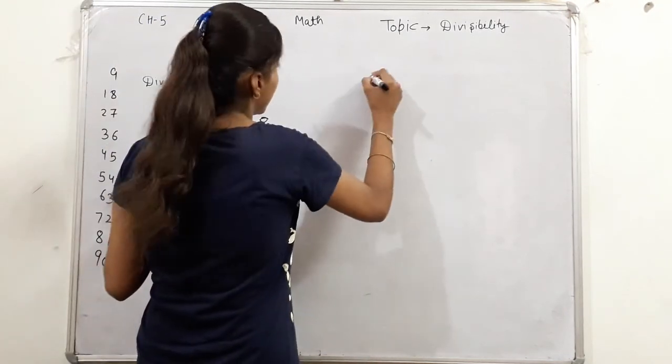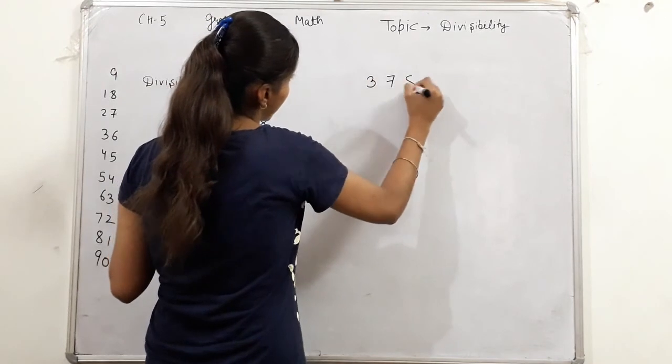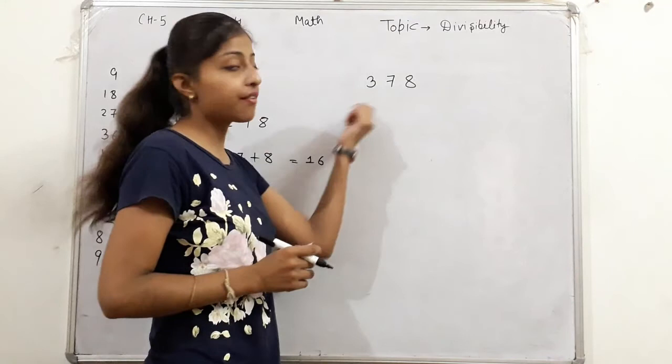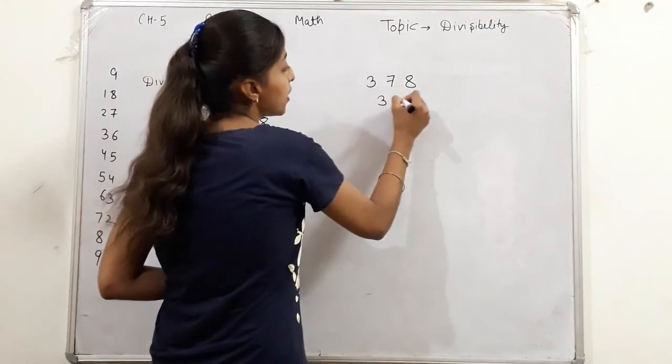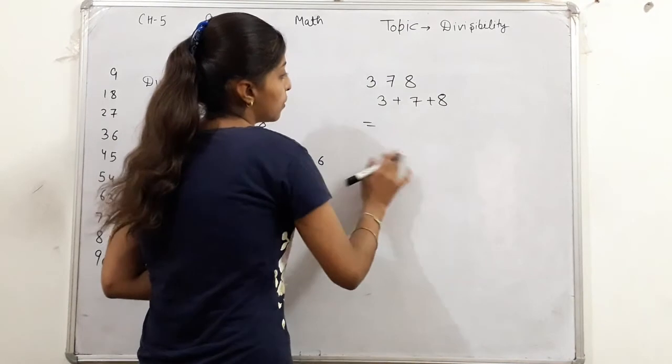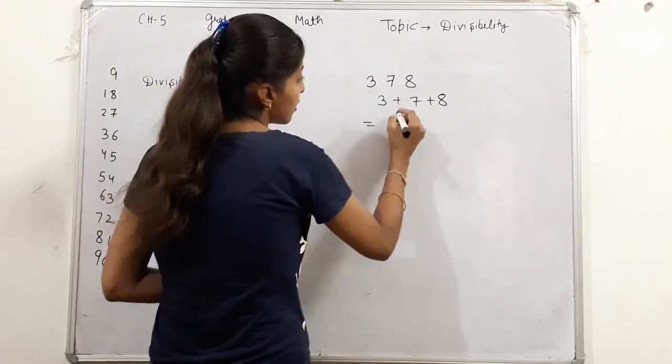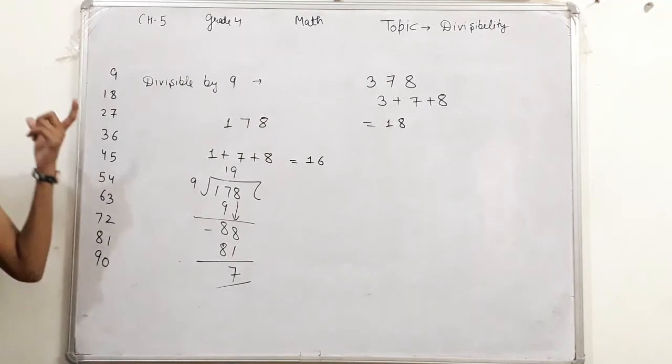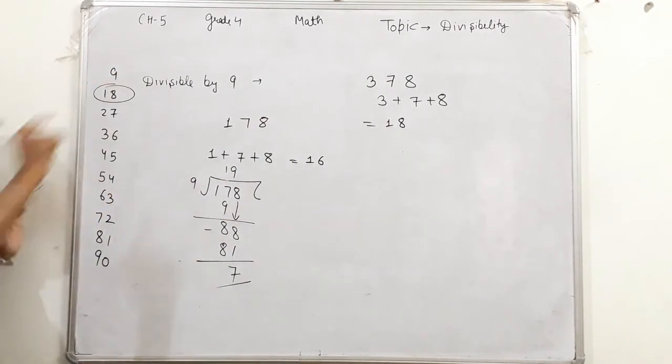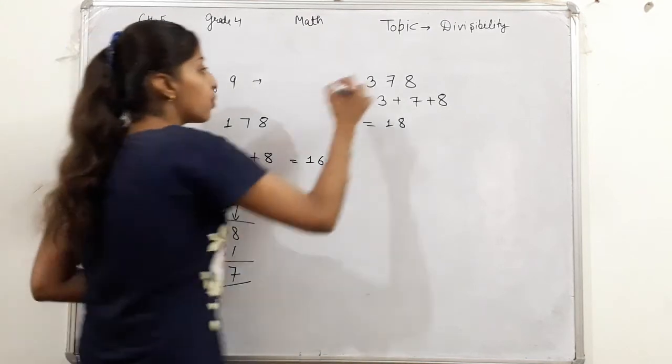Now let's take next one: 378. Check its sum - 3 plus 7 plus 8 equals 11 and 7, which is 18. Is 18 in the 9's table? Yes. This means that number will divide by 9. Let's verify by dividing also.